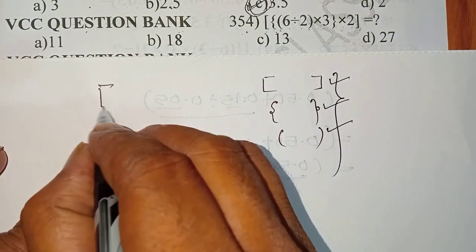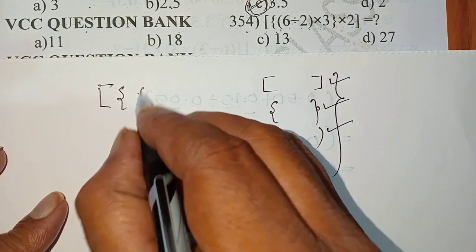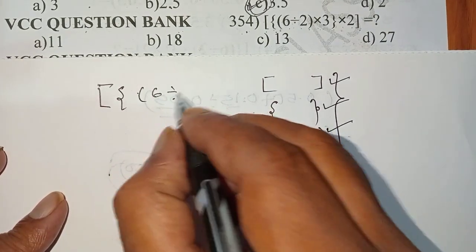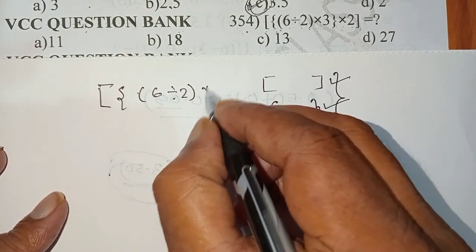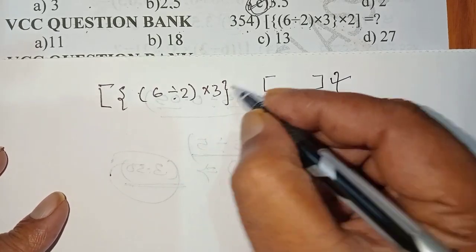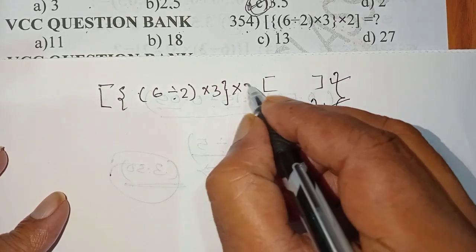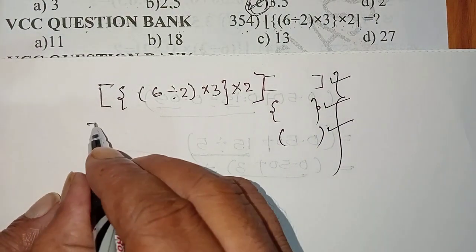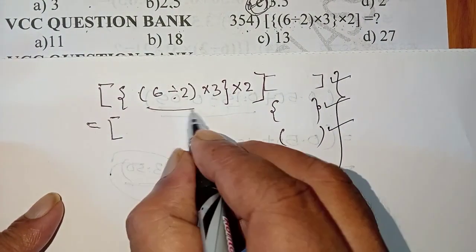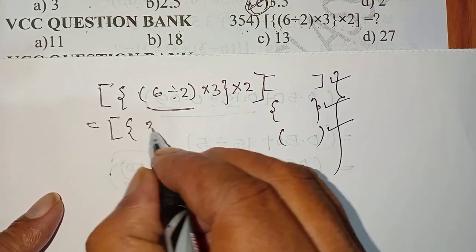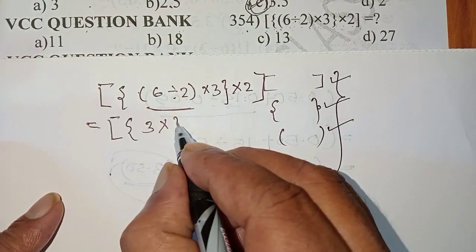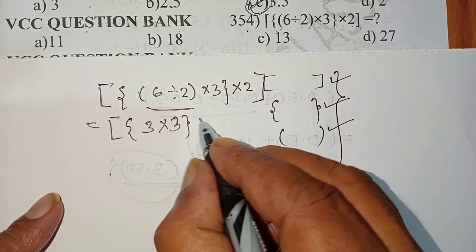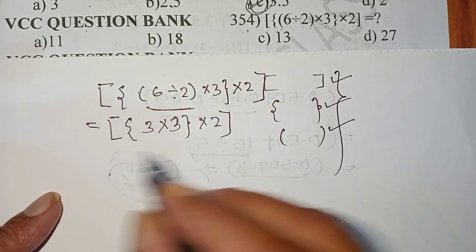Here question is big bracket, flower bracket, small bracket 6 divide 2 into 3, close the flower bracket, into 2, close the big bracket. Now we will open the small bracket. Here answer is 3 and close the flower brackets into 2, big bracket closed here.